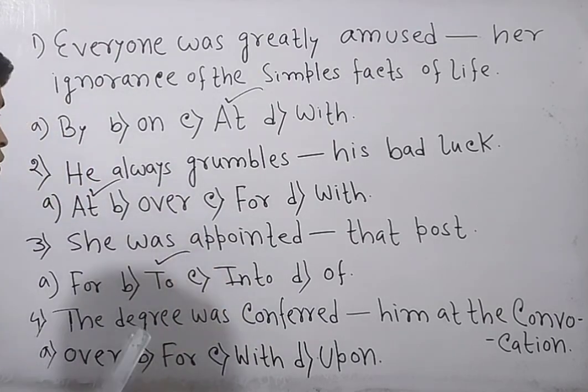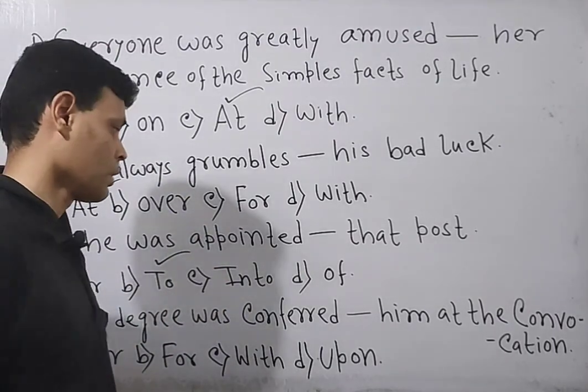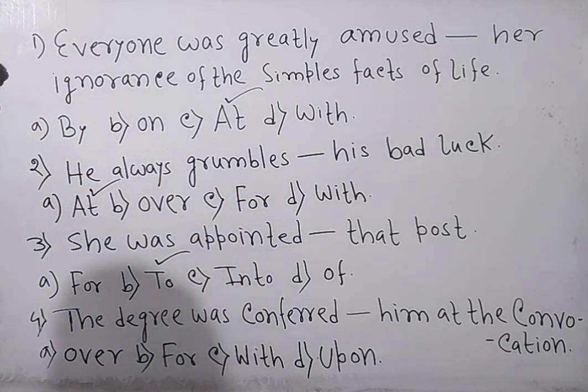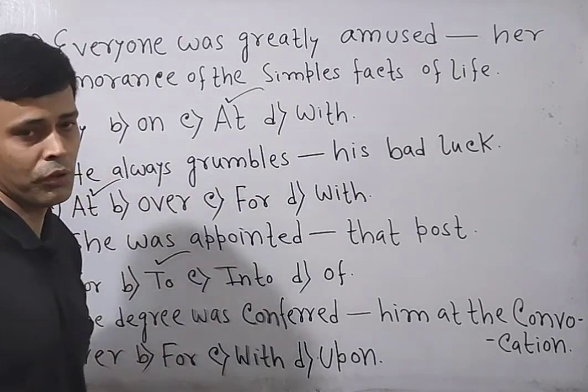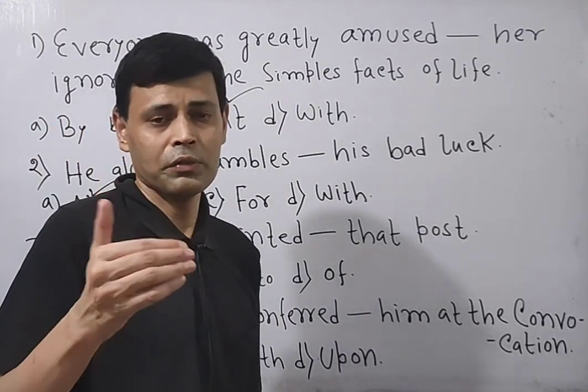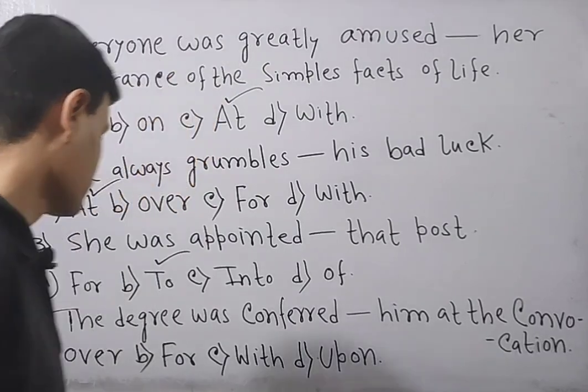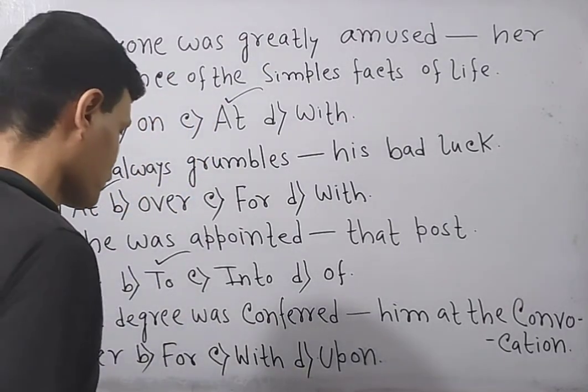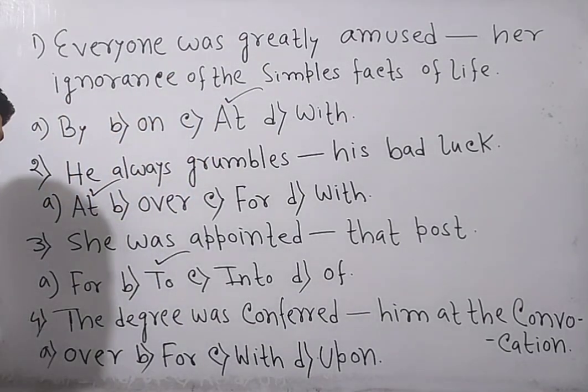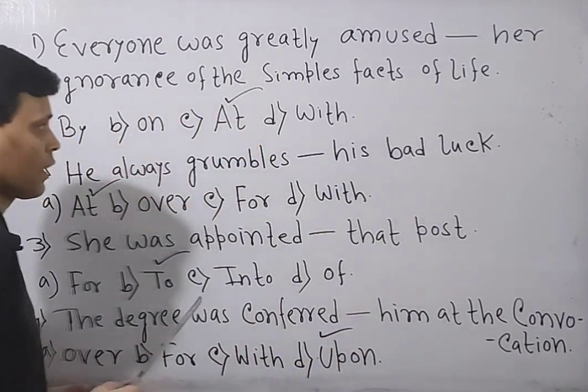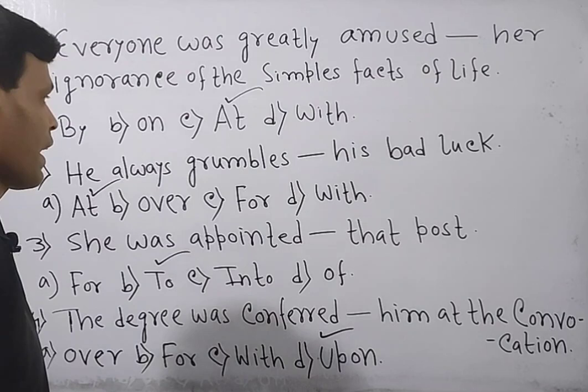Now go next. The degree was conferred - meaning given - at the convocation. Options are: over, for, with, upon. Now be careful, whenever the word 'conferred' is there, you need to use the preposition 'upon' thereafter. Therefore the answer is 'upon'. It is not over or for or with.